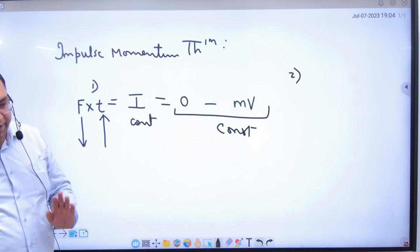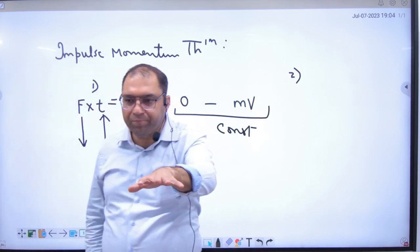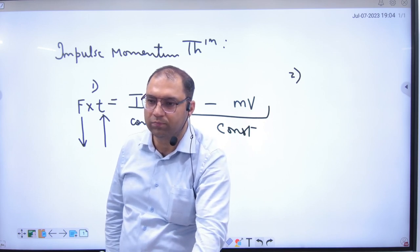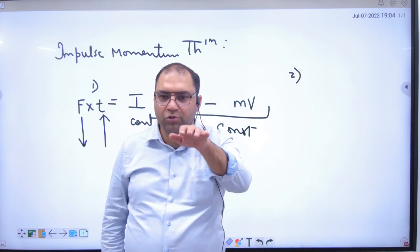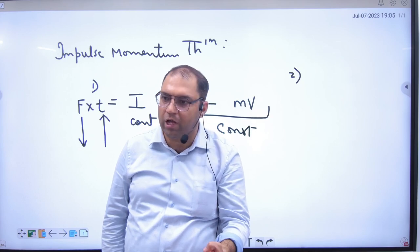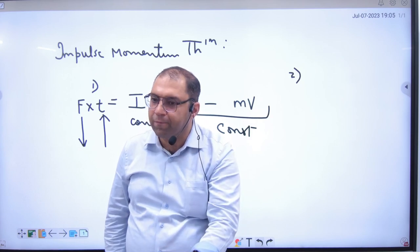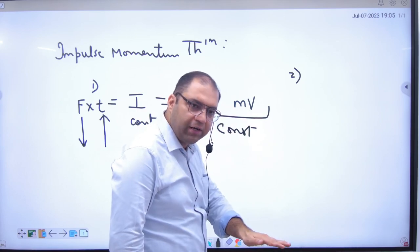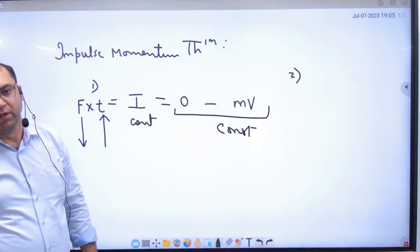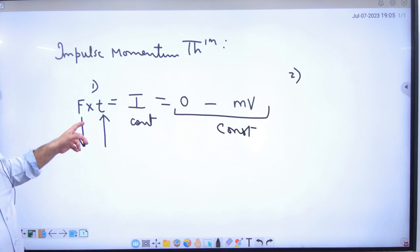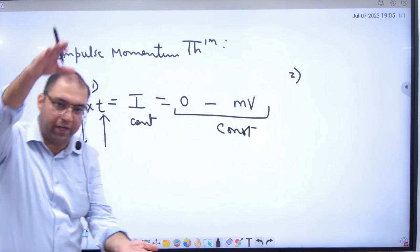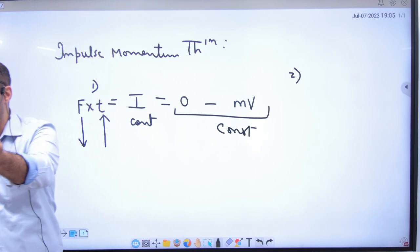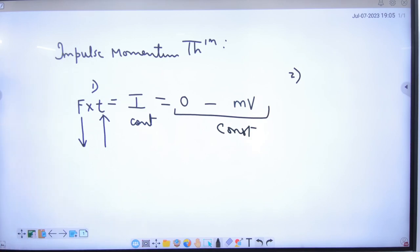Finally आपको zero पर लेके आना है। बढ़िया शॉकर क्या करेगा — MV momentum है आपकी body का, आराम आराम से आपको नीचे लेके आएगा। जो बेकार शॉकर है वो एकदम 0 पर ले आएगा। जो आराम से लेके आ रहे हैं वो time बढ़ा रहे हैं — shock को absorb कर रहे हैं, तभी तो नाम है 'शॉकर'। तो impulse यानि कि constant आपके हाथ में नहीं है, पर आपकी body पे जो force लग रही है उसका अगर आप time बढ़ा दो तो force कम हो जाएगी। शॉकर क्या करता है — time लेता है दबने में, time लगता है खुलने में, तो time की वजह से force आपकी body पे कम लगती है।